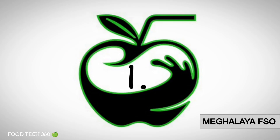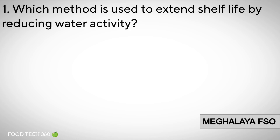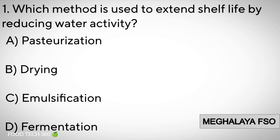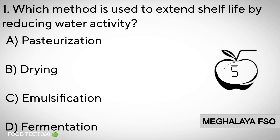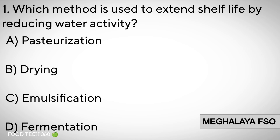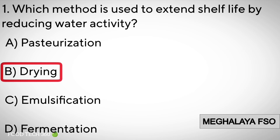Question number one. Which method is used to extend shelf life by reducing water activity? A. Pasteurization, B. Drying, C. Emulsification, D. Fermentation. Correct answer: B. Drying.